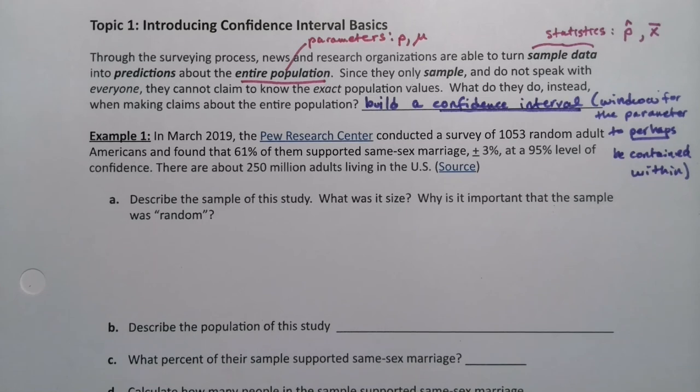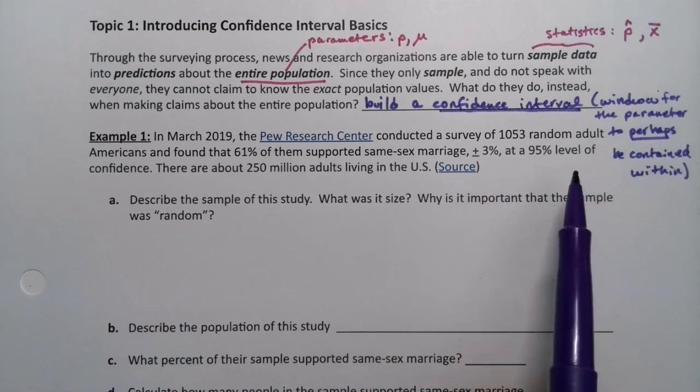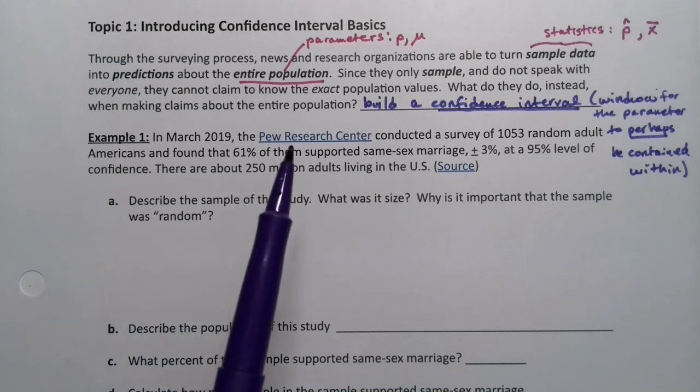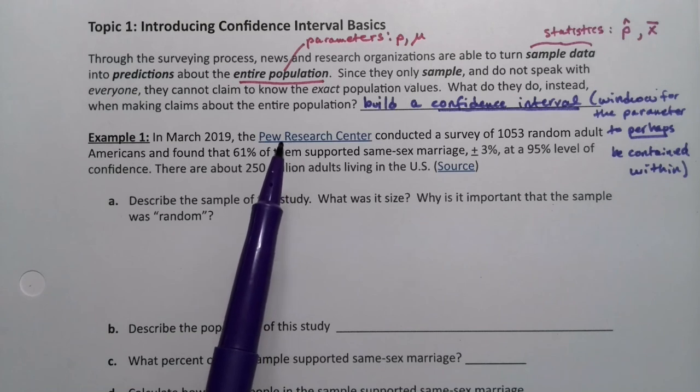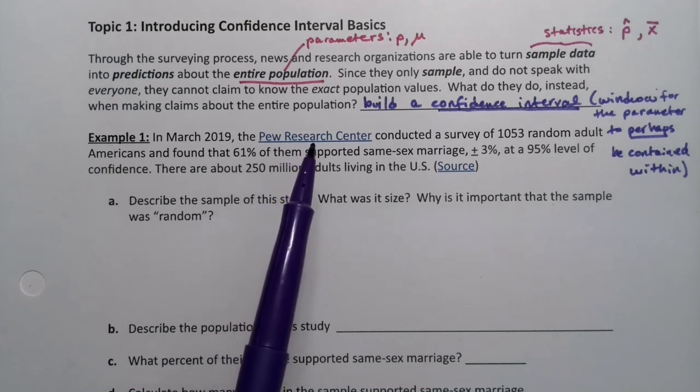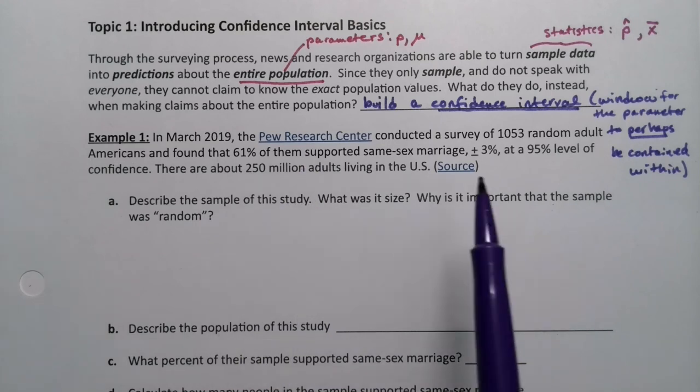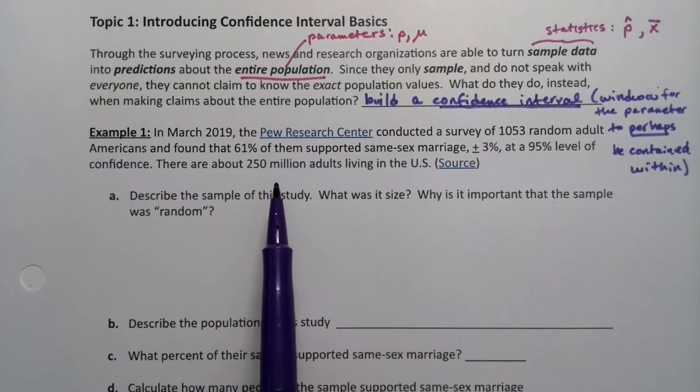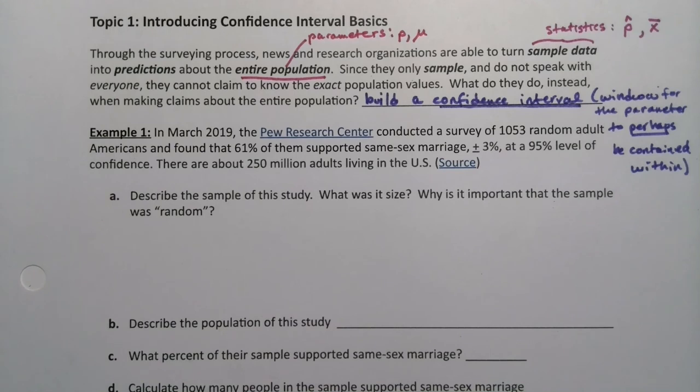In March 2019, the Pew Research Center conducted a survey of 1,053 random adult Americans and found that 61% of them supported same-sex marriage, plus or minus 3% at a 95% level of confidence. This is real data. Just FYI, there are about 250 million adults living in the U.S.